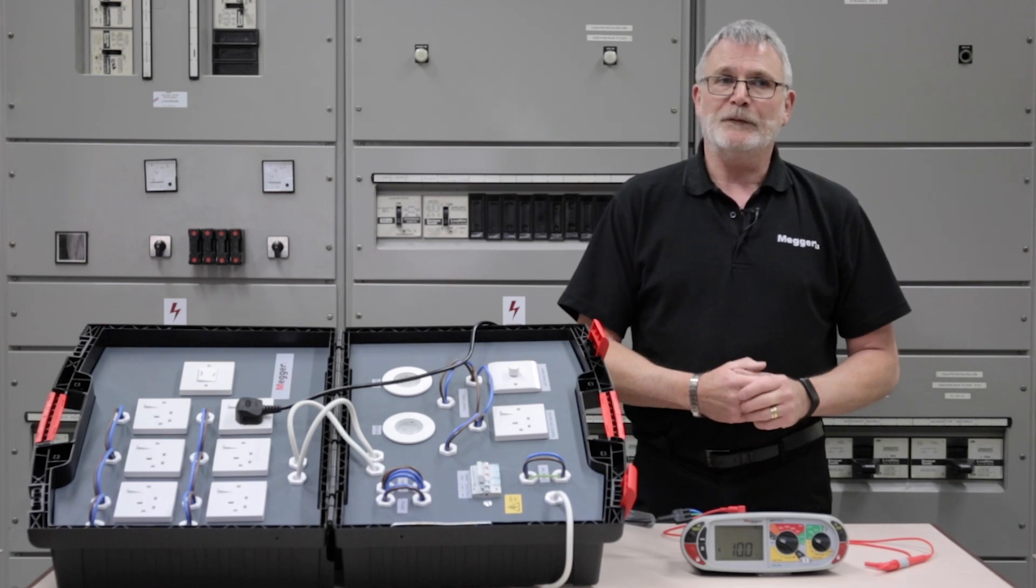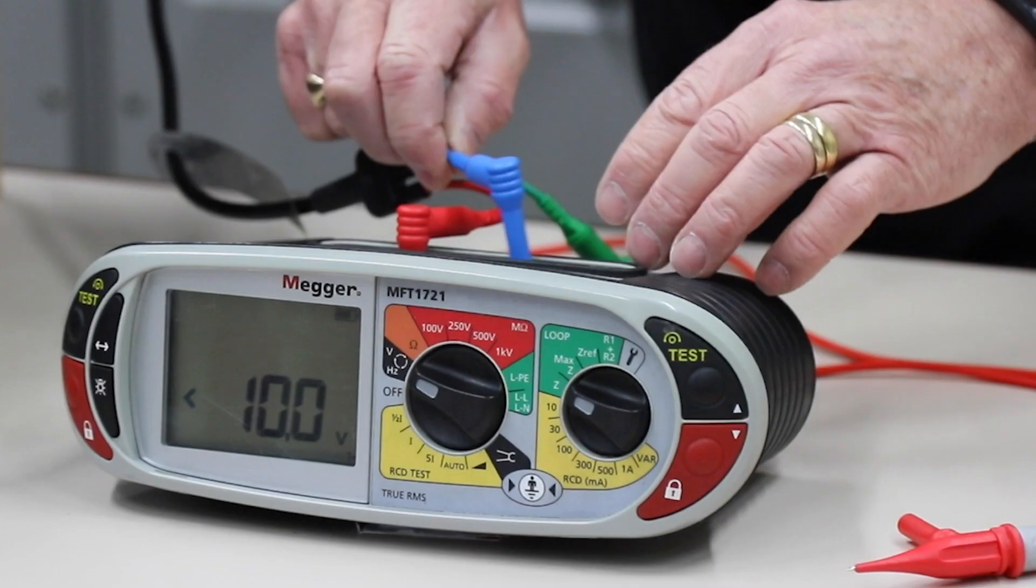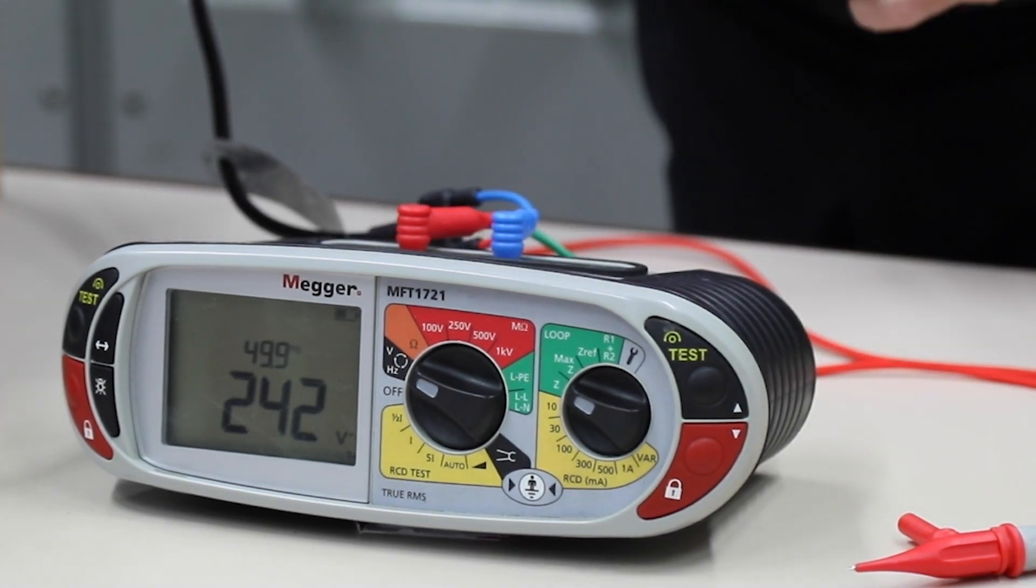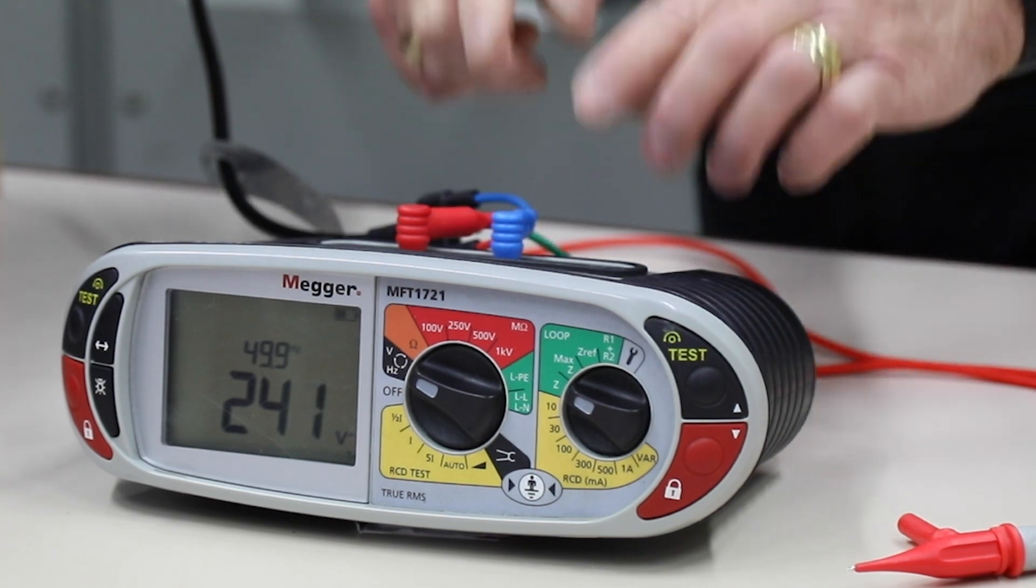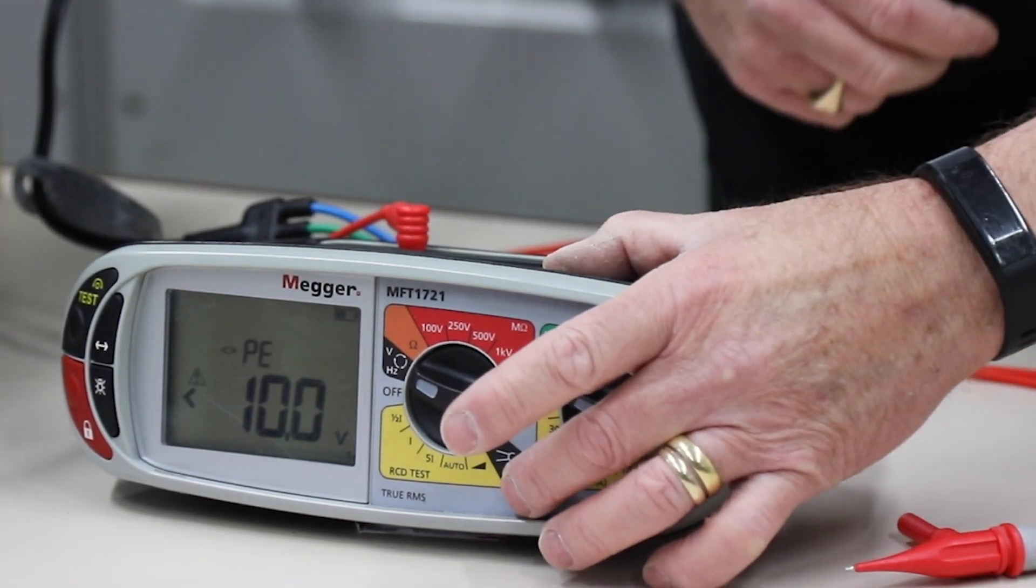That will only give you the fact that there is potential there. If you want to know what voltage is present, then go to a known earth or neutral, put the second lead in and then that will give you the voltage present. But as I say, that's potential difference. The actual tester for the touch voltage is just using potential.